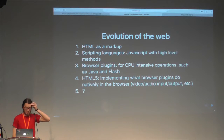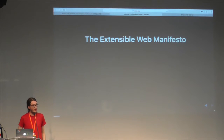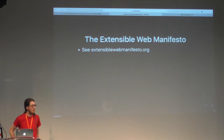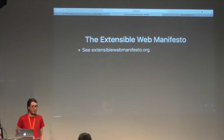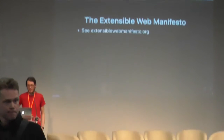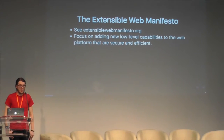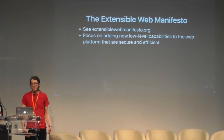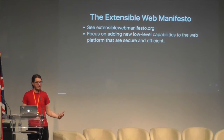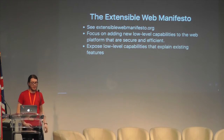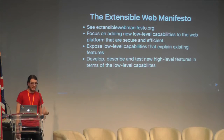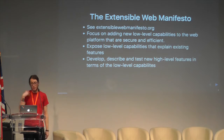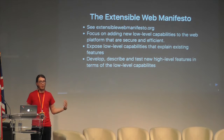Where is this going next? In 2012, there was something called the Extensible Web Manifesto that was written by several very influential members of the web community, including Brian Bandon who had created JavaScript. You can look it up more online if you're interested. The gist of this though was it was focused on adding new low-level capabilities to the web platform that were secure and efficient, and expose those low-level capabilities and use that to explain existing features of the web. Then lastly, to develop, describe, and test new high-level features in terms of the low-level capabilities.